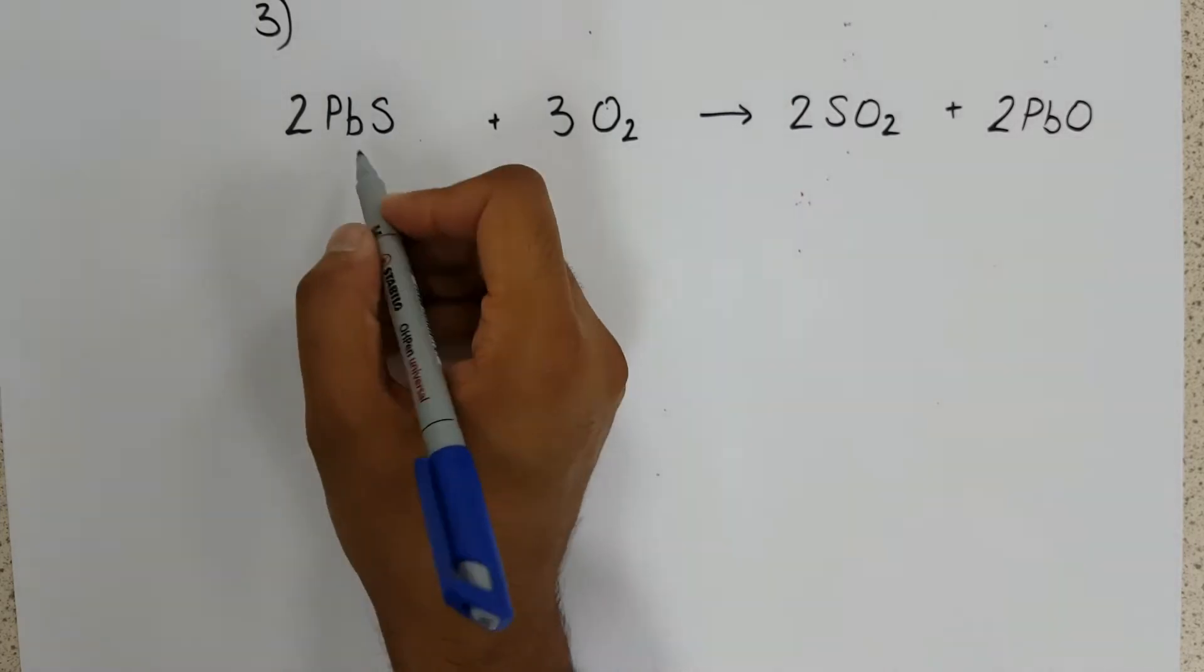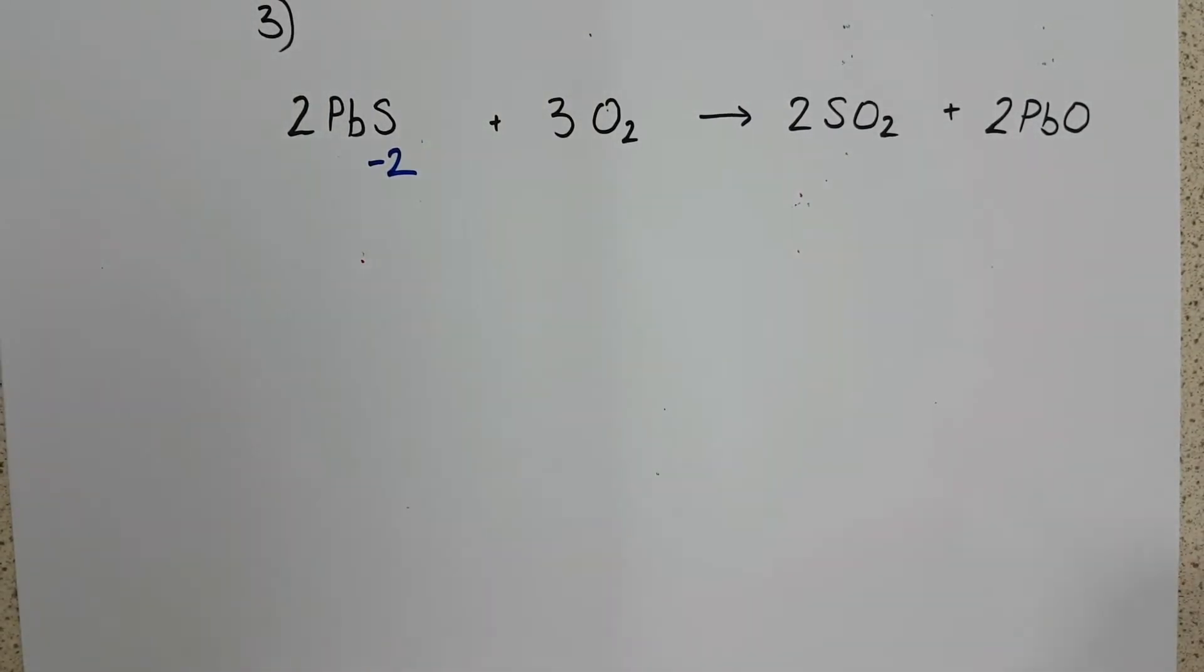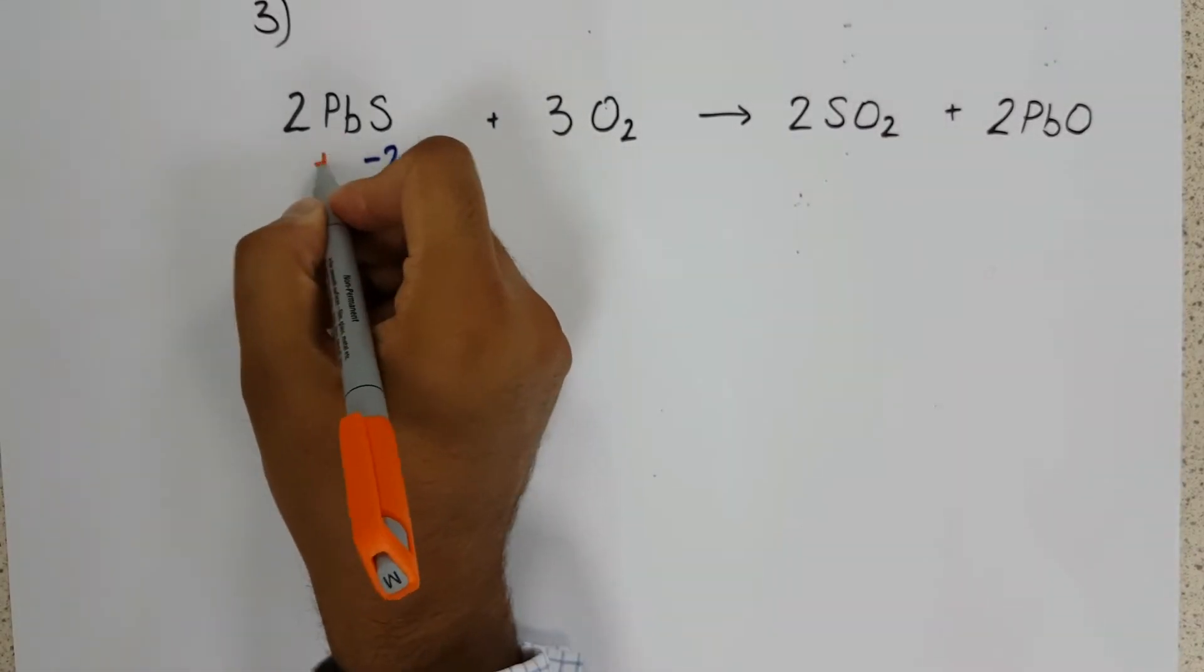Sulfur is in group six, therefore its charge is minus two. That makes our lead, Pb, a plus two.